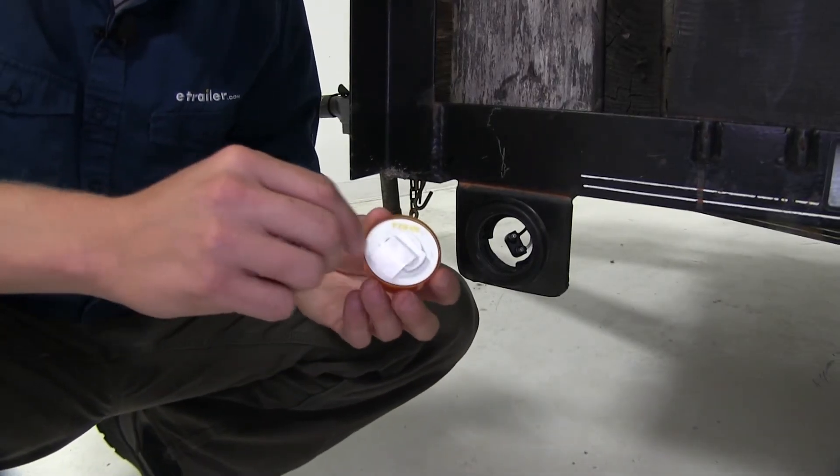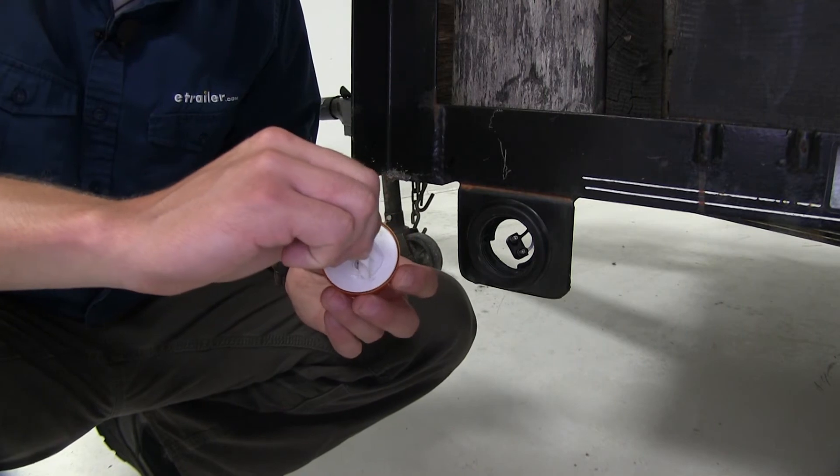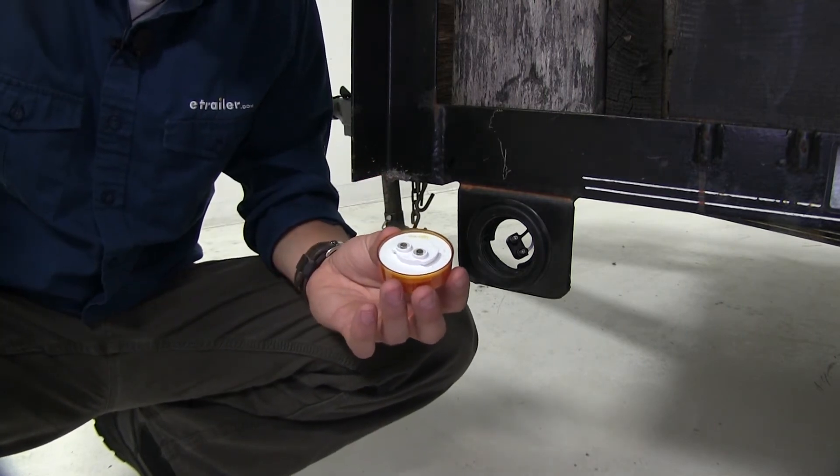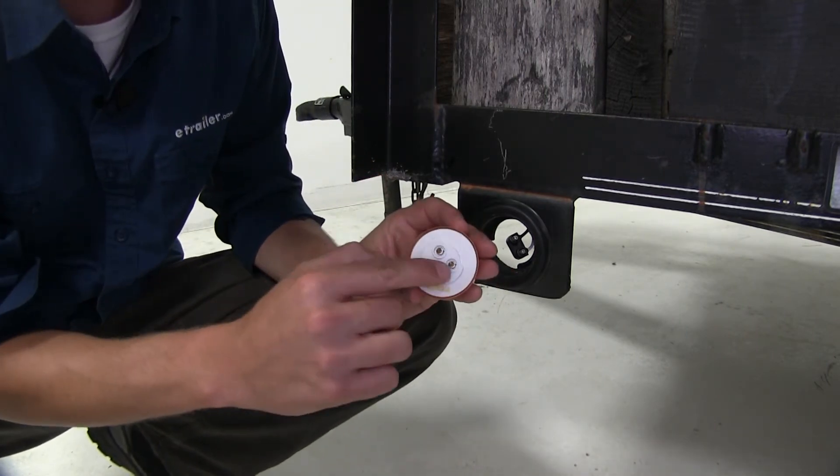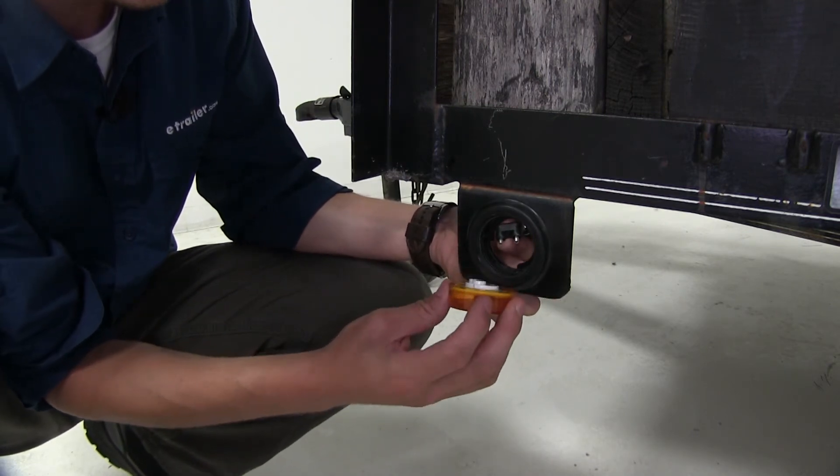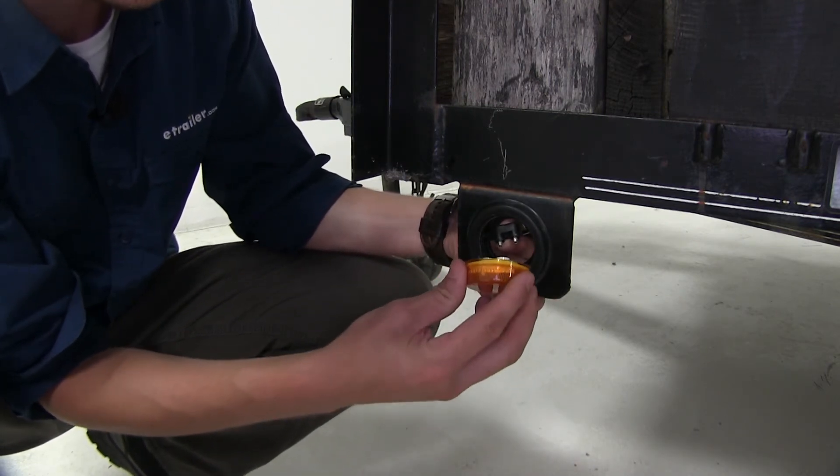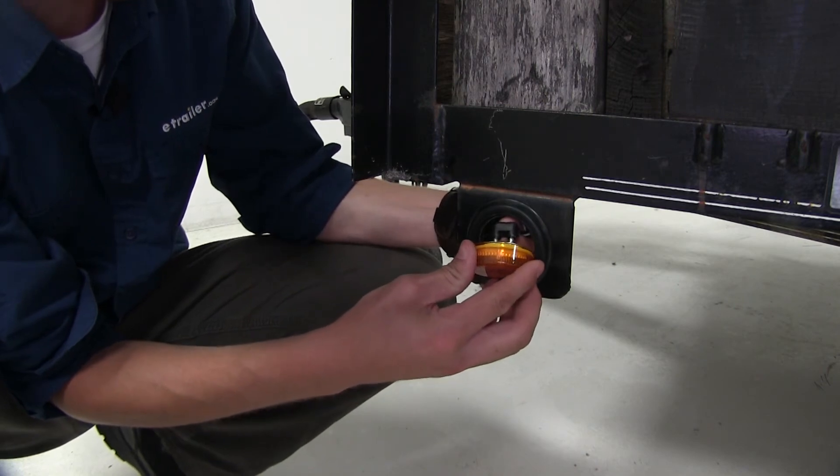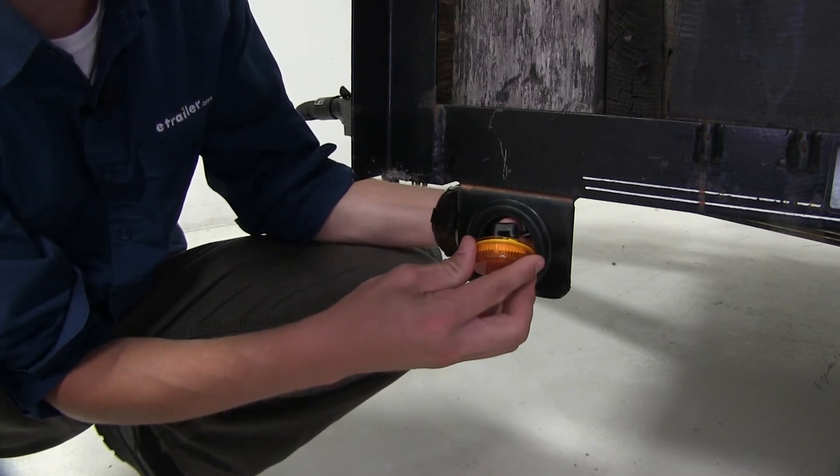Now our new light's going to come pre-greased. Let's peel back the paper. You can see how it's pre-greased in there. When we hook it up, it doesn't matter which way you go, it'll work either way. We'll simply line up our plug and push it firmly in place.